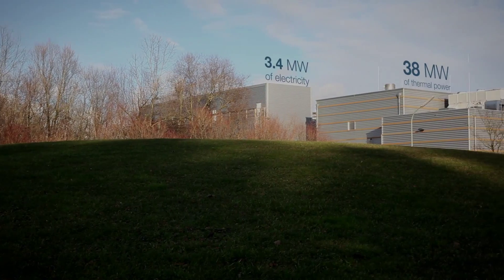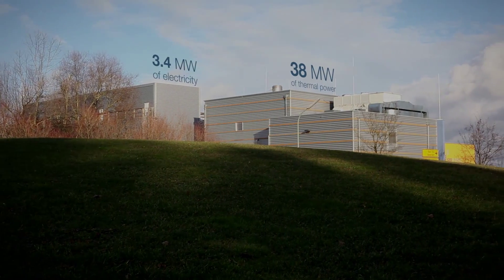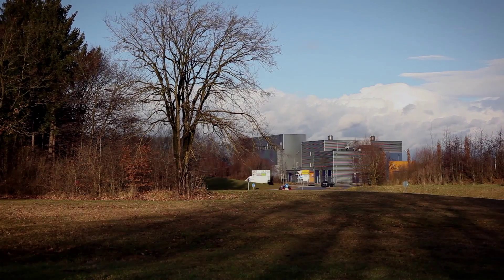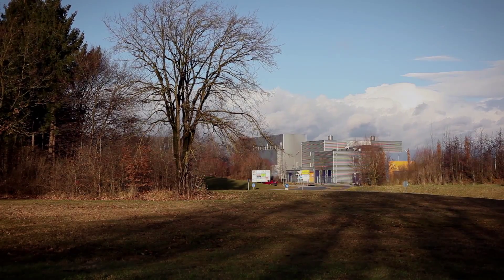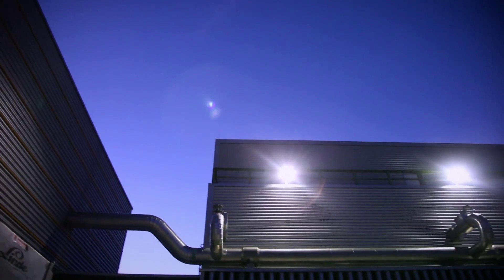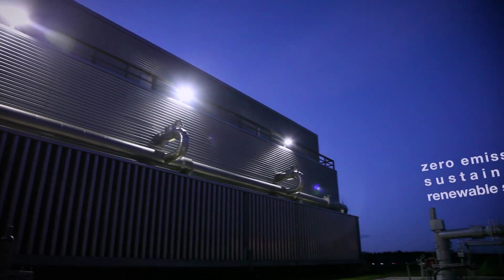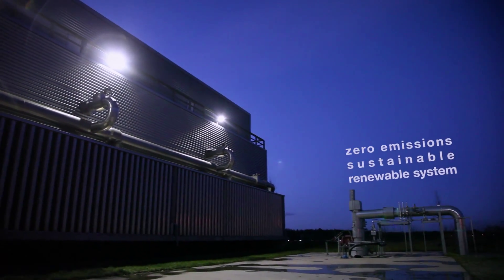The Unterhaken Kalina Cycle Power Plant produces 3.4 megawatts of electricity and 38 megawatts of thermal power distributed through a district heating system to thousands of homes. This plant is powered entirely by the Earth's heat in a zero-emission, sustainable, renewable geothermal system.